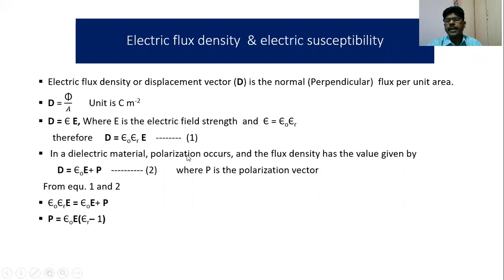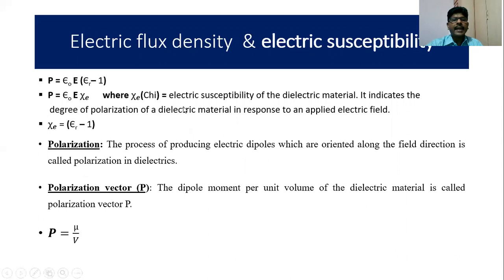In a dielectric material, polarization occurs and the flux density is given by D = ε₀E + P, where P is the polarization — expression (2). Equating expression (1) and expression (2) and solving for P, we get P = ε₀ E (ε_r − 1). This quantity (ε_r − 1) is the electric susceptibility, so P = ε₀ × E × χ_e. Electric susceptibility indicates the degree of polarization of a dielectric material in response to an applied electric field.